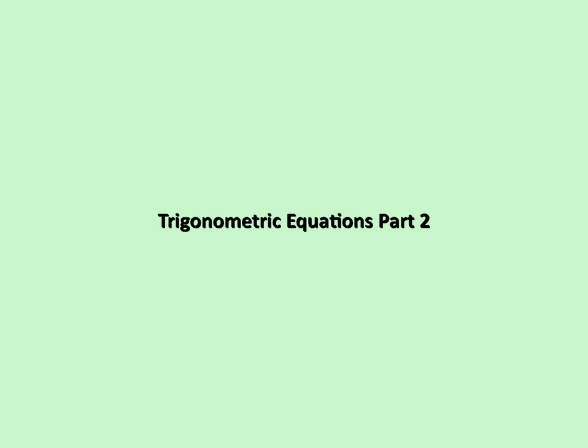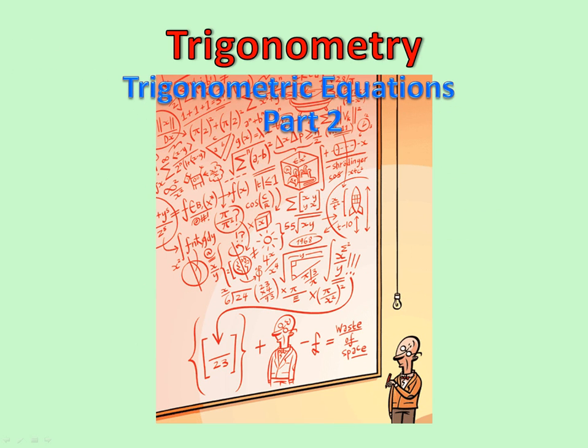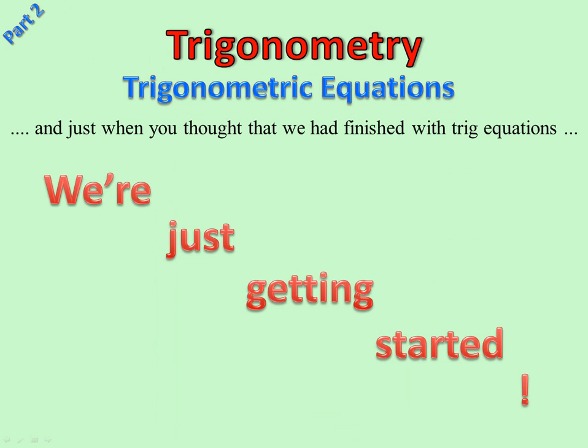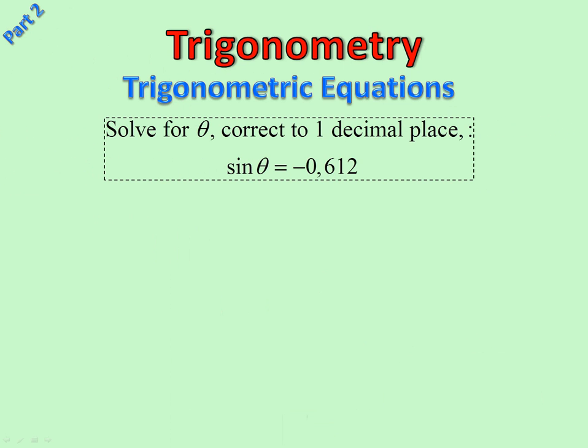Trigonometric Equations, Part 2. We've done this before. The only difference is that there's no 0 to 360, there's no set domain here. So we're solving for sine of theta and it doesn't say anything about a domain.